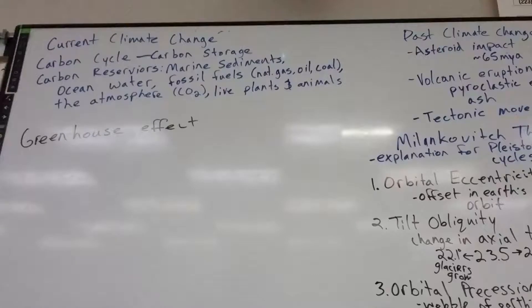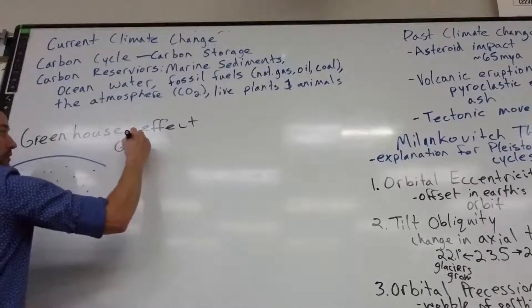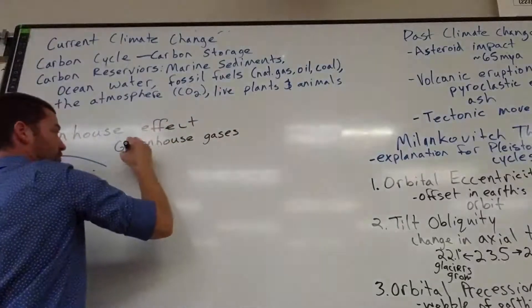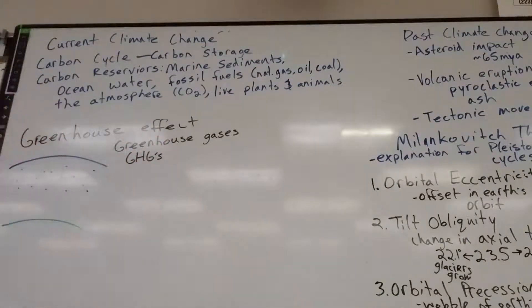So greenhouse effect is a naturally occurring process. The basics of it, we're going to draw the atmosphere. There's the atmosphere. Here's Earth's surface. And we've got carbon dioxide floating around in the atmosphere. And really we should call those greenhouse gases.